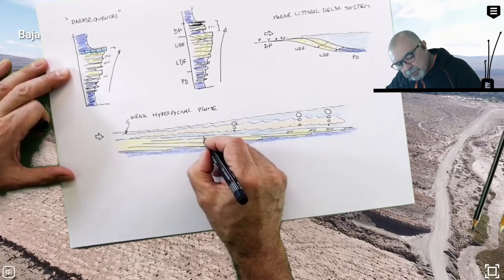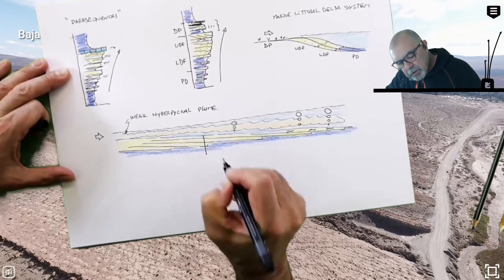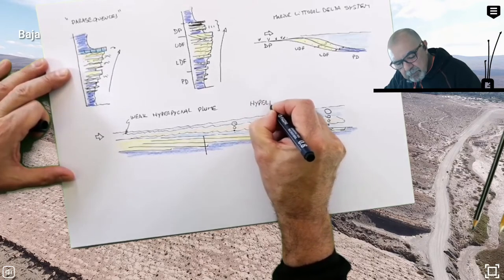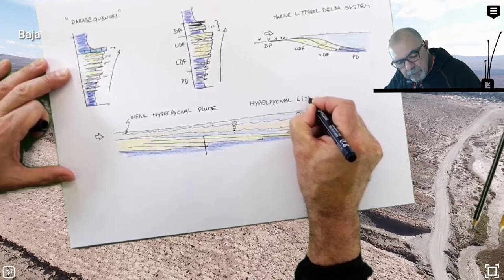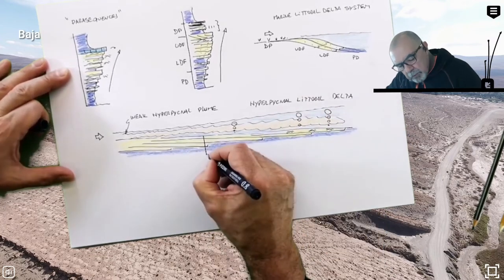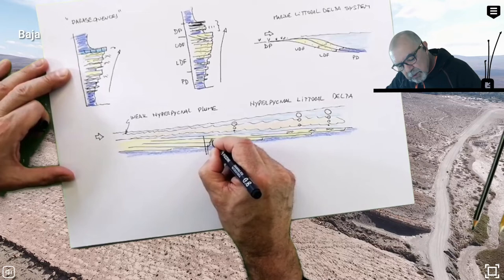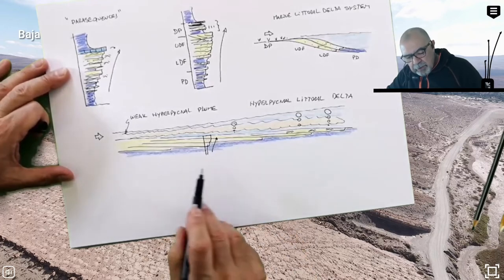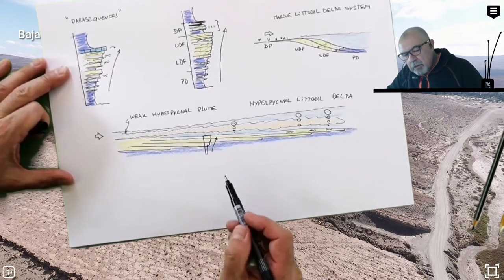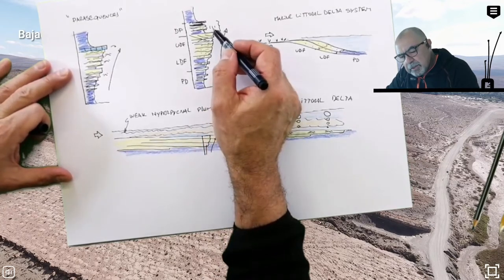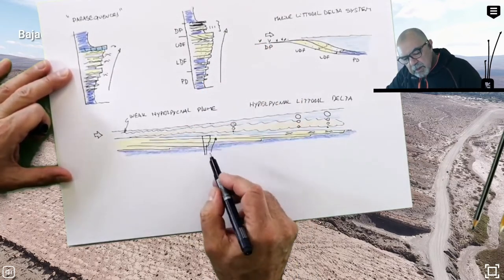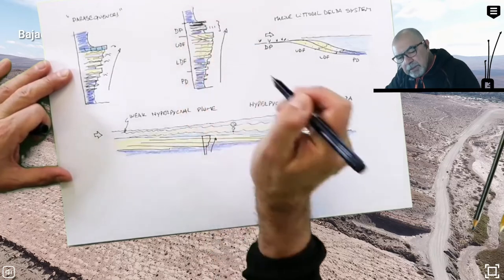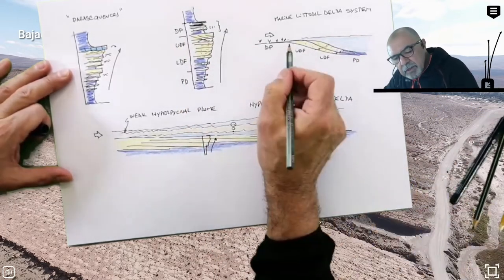If you look into the detail, this deposit you are going to see a lot of wave reworking here. And basically the vertical succession of this ramp delta or hyperpycnal littoral delta, we are going to see this coarsening and thickening upward succession.